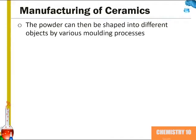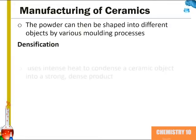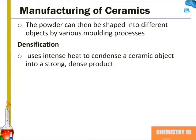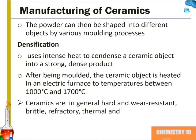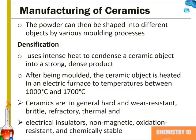The powder with additives can then be shaped into different objects by various molding processes. Following this, they can undergo the process of densification, which uses intense heat to condense a ceramic object into a strong, dense product. After being molded, the ceramic object is heated in an electric furnace to temperatures between 1000 and 1700 degrees Celsius. Ceramics are in general hard and wear resistant, brittle, refractory, thermal and electrical insulators, non-magnetic and oxidation resistant, while being chemically stable.